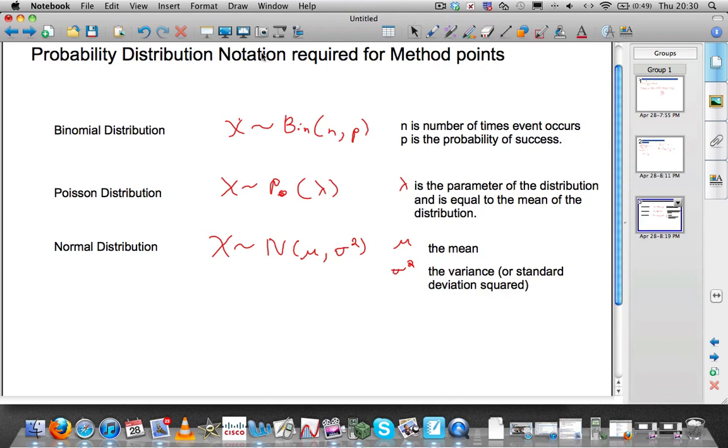Okay, this is a good question for everybody. Anton asked, what is the probability distribution notation required for method points? Remember, you cannot put on the exam the exact calculator notation. They're not interested in that.